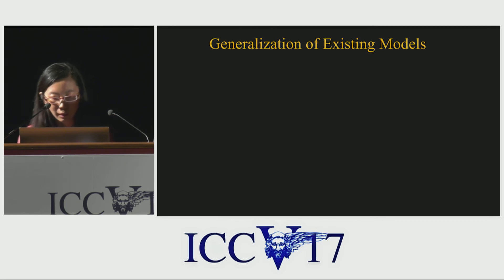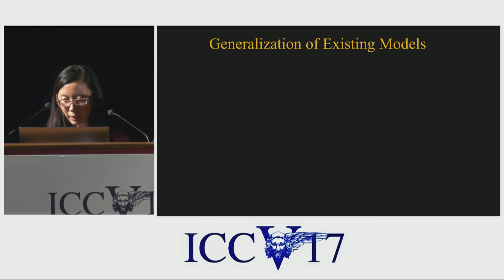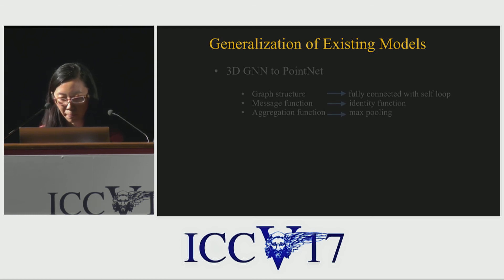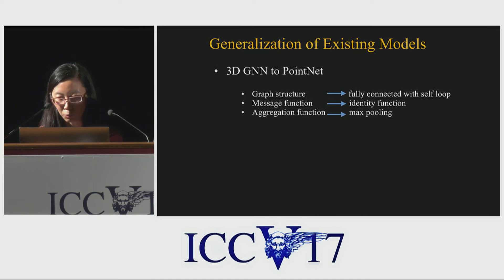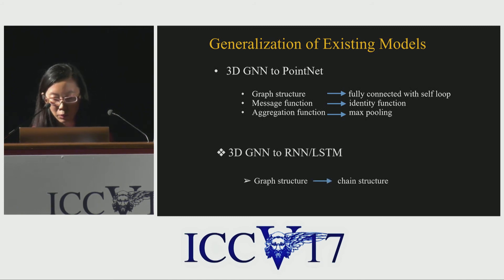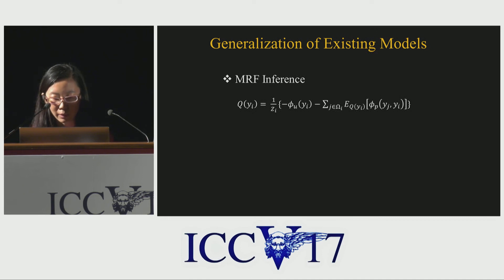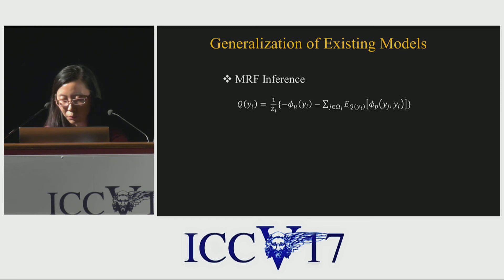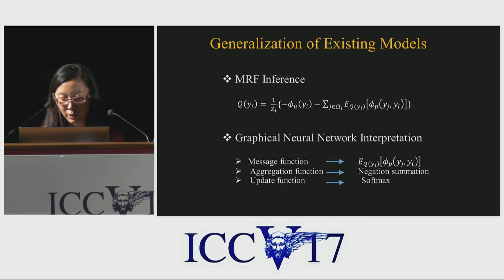In the previous slides, I talked about 3DGN for RGB-D semantic segmentation. We also found 3DGN is a generalization of some existing models. When the graph structure is a fully connected graph with self-loop, the message function is the identity function, and max pooling is the aggregation function, we can mimic the backbone of PointNet. If the graph structure is a chain, 3DGN can serve as a sequential model like RNN and LSTM. Moreover, graph neural networks are also closely related to inference algorithms in probabilistic graphical models. If we define the message aggregation and update function in a specific form, we can achieve mean field inference using graph neural networks.